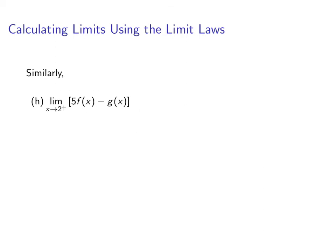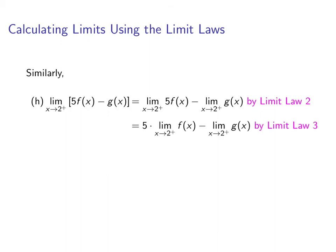For part H, we now do the limit from the right. We'll break it up just like the previous one, using limit laws two and three. This time, however, the limit as x approaches two from the right of f(x) equals zero, so we end up with negative four.